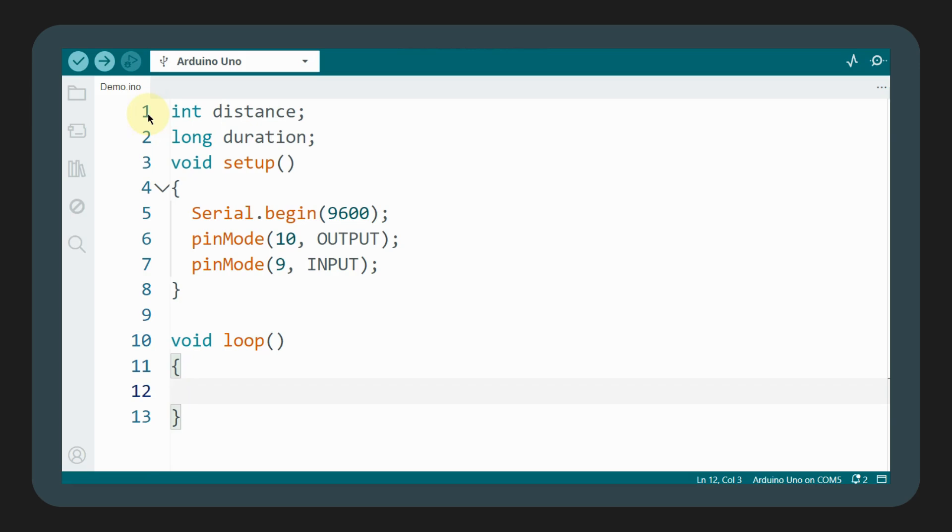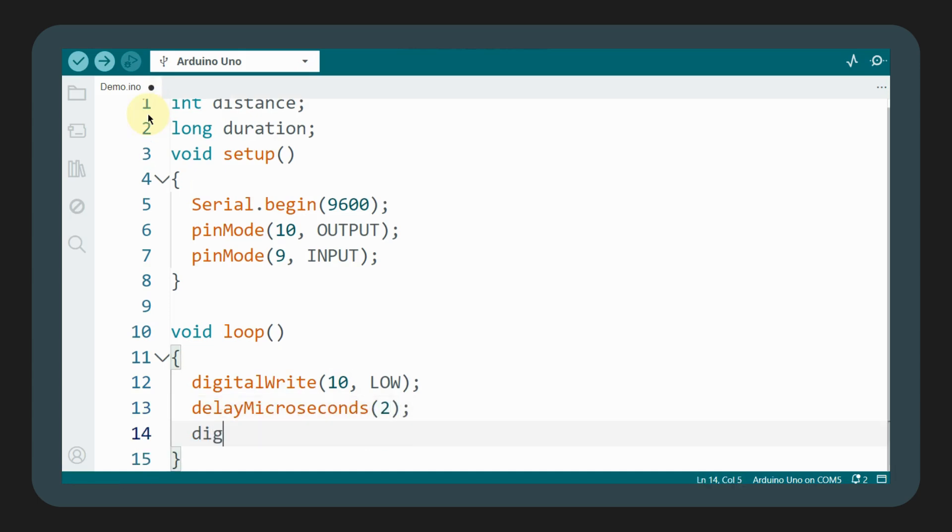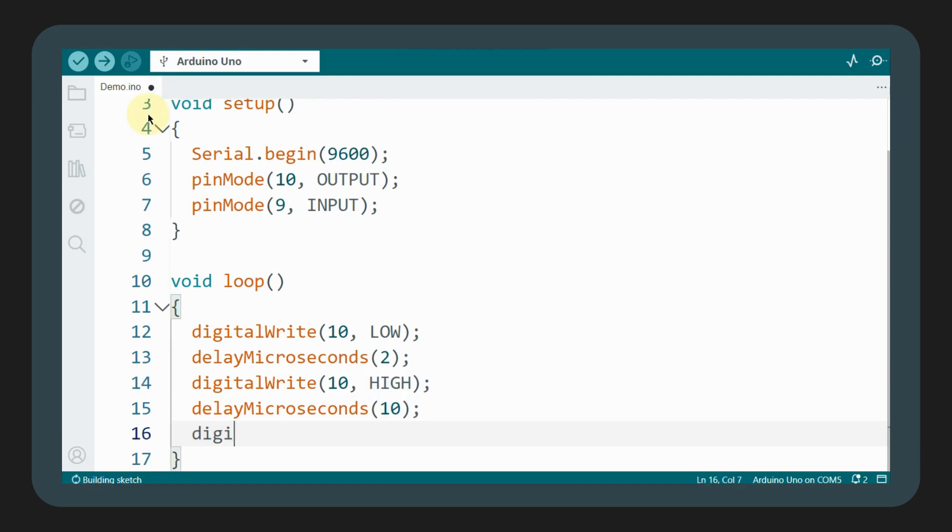In the loop function, we start by setting the trigger pin low to ensure a clean high pulse. We add a small delay of about 2 microseconds using the delay microseconds function. After the delay, we set the trigger pin to high, wait for 10 microseconds, and set it to low again.